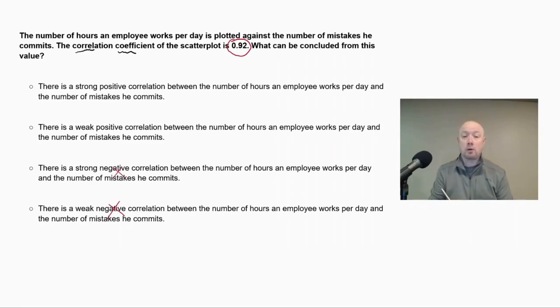Now, how strong or weak is this correlation? Well, what we're looking for is, how close this value is to 1. So at 1, it's the strongest it can be. So in this case here, 0.92 is very close to 1, so that means that it's not a weak correlation, but it's actually a strong positive correlation.